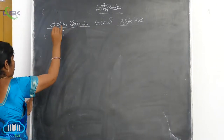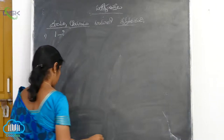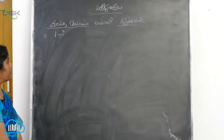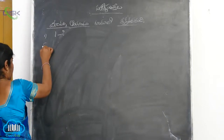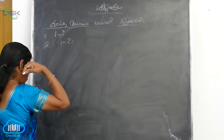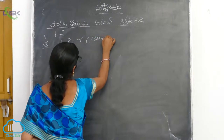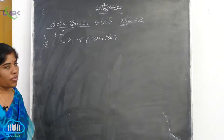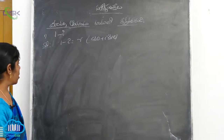First one, 1 minus i is equal to cos theta plus i sin theta. So 1 minus i is equal to r into cos theta plus i sin theta.